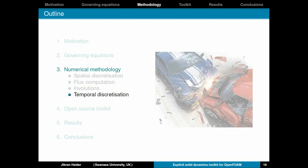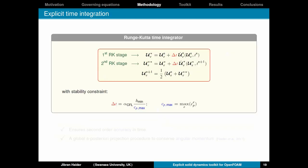Moving on to the temporal discretization. We employ a standard one-step two-stage explicit Runge-Kutta time integrator shown here with two stages. And it comes with the stability constraint on the time increment, which is based on the CFL number, your minimum characteristic length in the domain and C_p max, which is the maximum pressure wave speed in the domain. Now, by employing this, we ensure a second-order accuracy in time as well. Moreover, if you want to conserve angular momentum, we can also apply a posteriori projection procedure to conserve it.